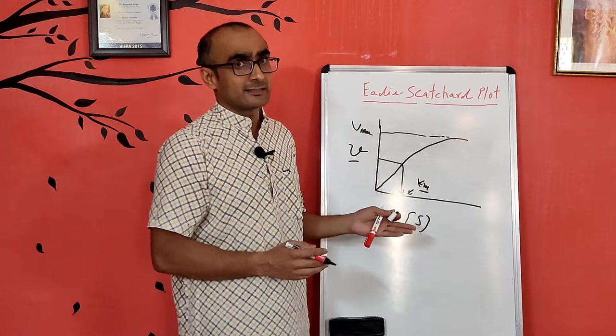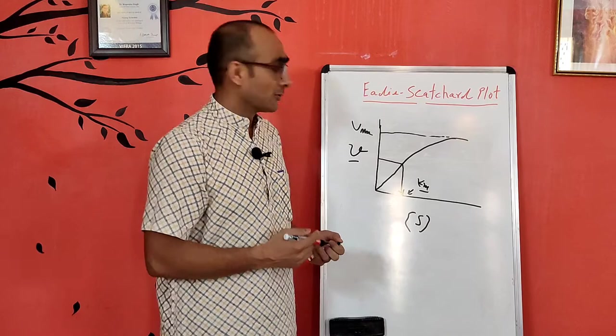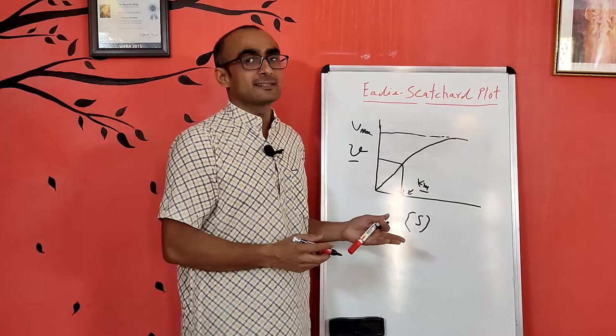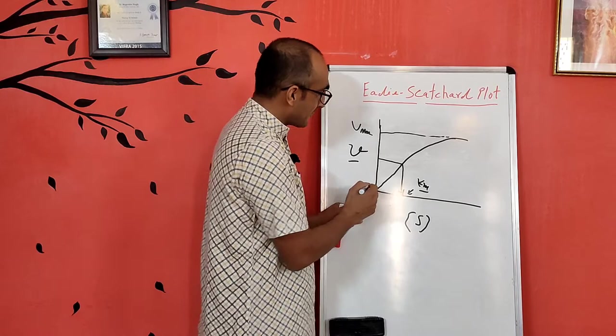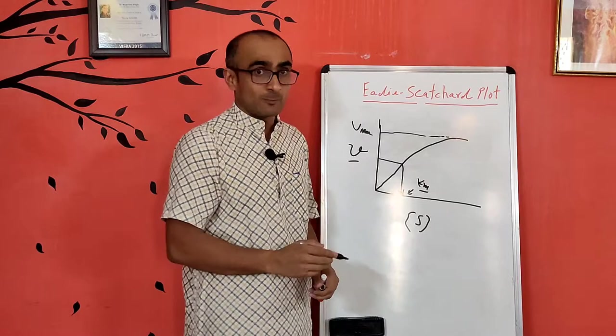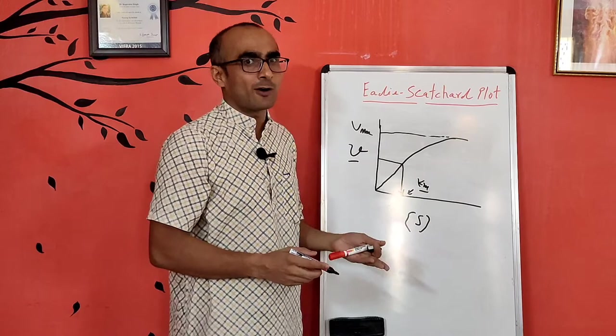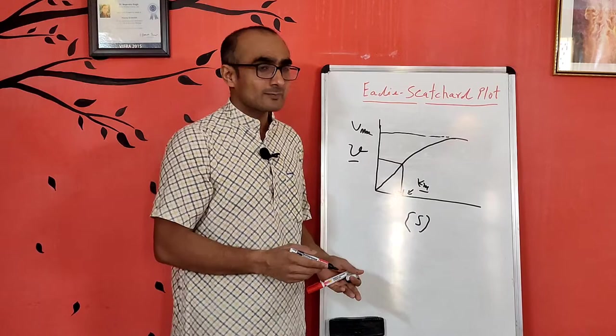If one is doing inhibitory studies, an inhibitor can be added and we can observe how Km and Vmax change, or at what affinity the inhibitor is binding to the enzyme. However, precise calculation of Vmax and Km directly from the Michaelis-Menten graph is not possible because it is hyperbolic in nature, so different methods are employed to calculate more precise values.